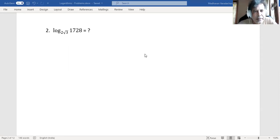Let us consider this as x. That means by converting this logarithmic expression to an exponential expression, we can write this as 2 root 3 to the power of x is equal to 1728.